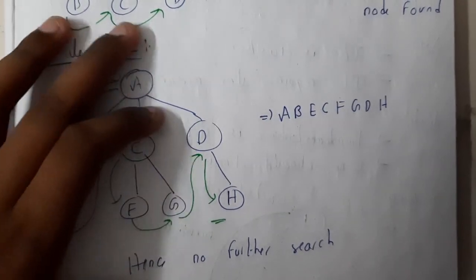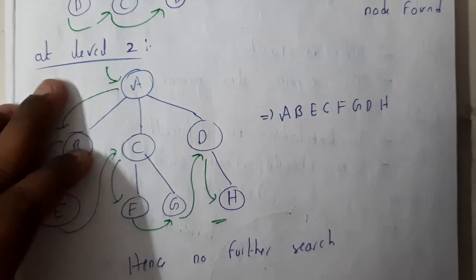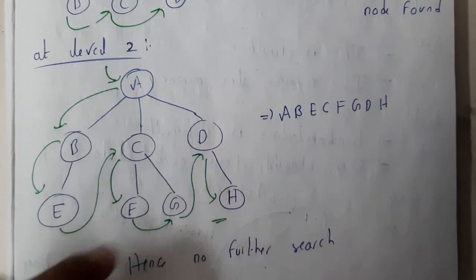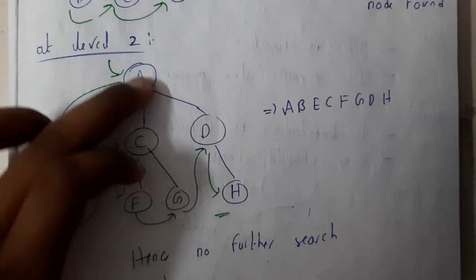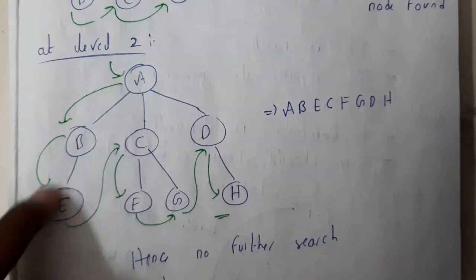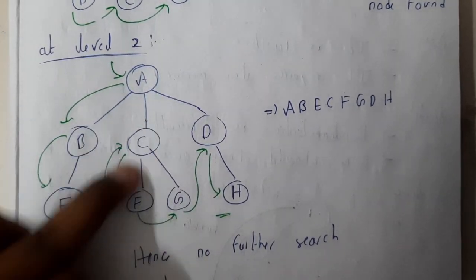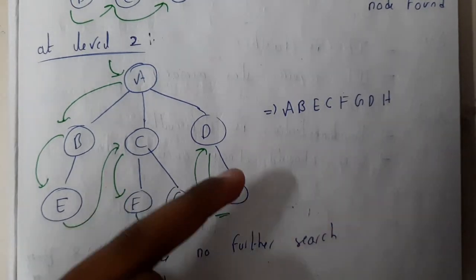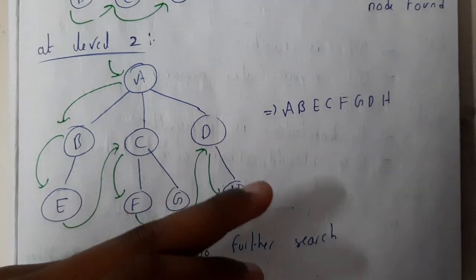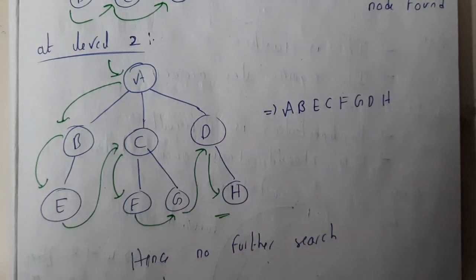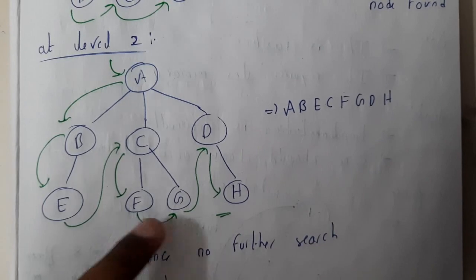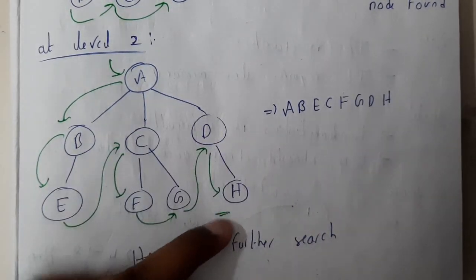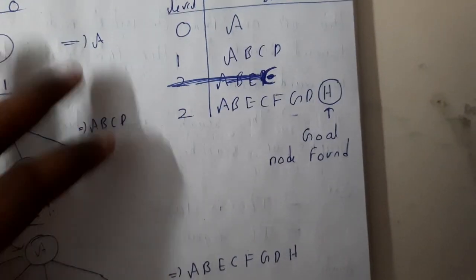Did we reach any goal node? At level 3 we have nodes A, B, C, D, E, F, G, H. The traversal order is A, B, E, C, F, G, D, H. At the end we reach H, which is the goal node.